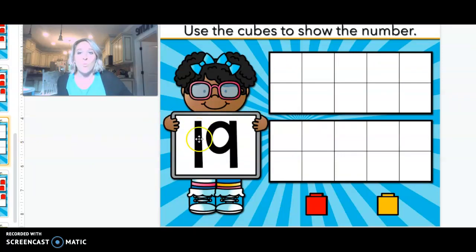19 is a 1 and a 9. It says its own name as well. 19. Alright, ready? Let's count 19 objects.